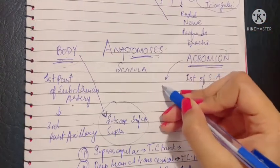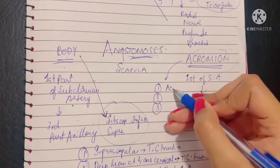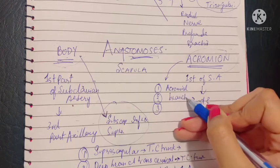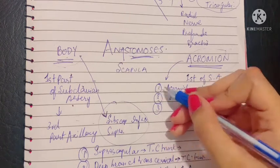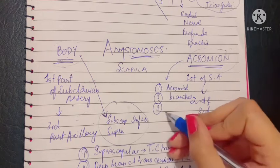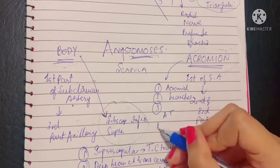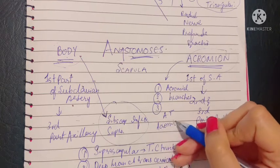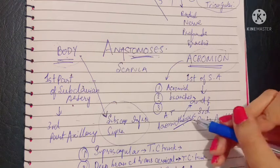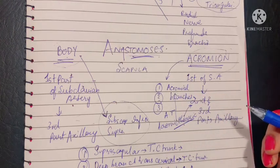Here there are three vessels taking part, and all are acromial branches. The first is the acromial branch of the acromiothoracic artery, which we studied in the second part of the axillary artery. It was a branch of the second part of the axillary artery and gives an acromial branch, which is the first branch taking part in the anastomosis over the acromion.